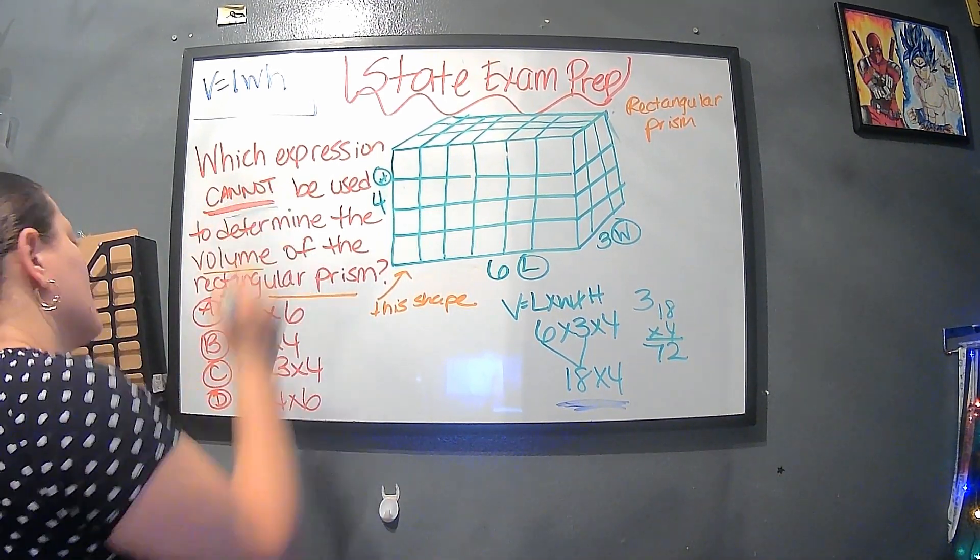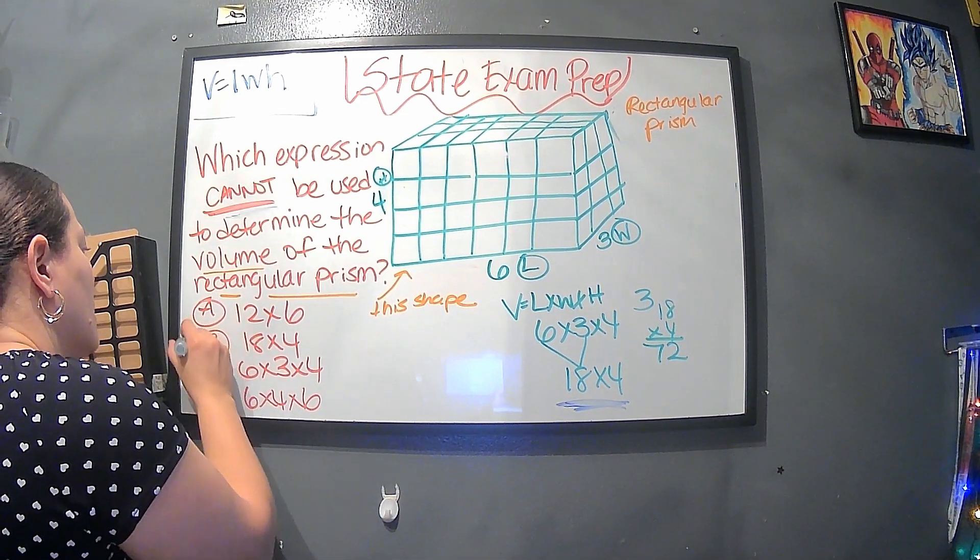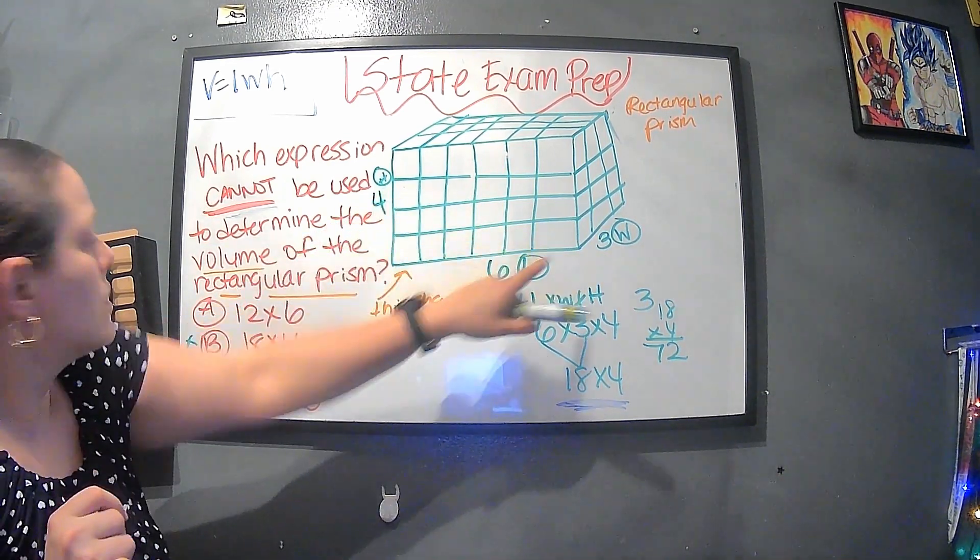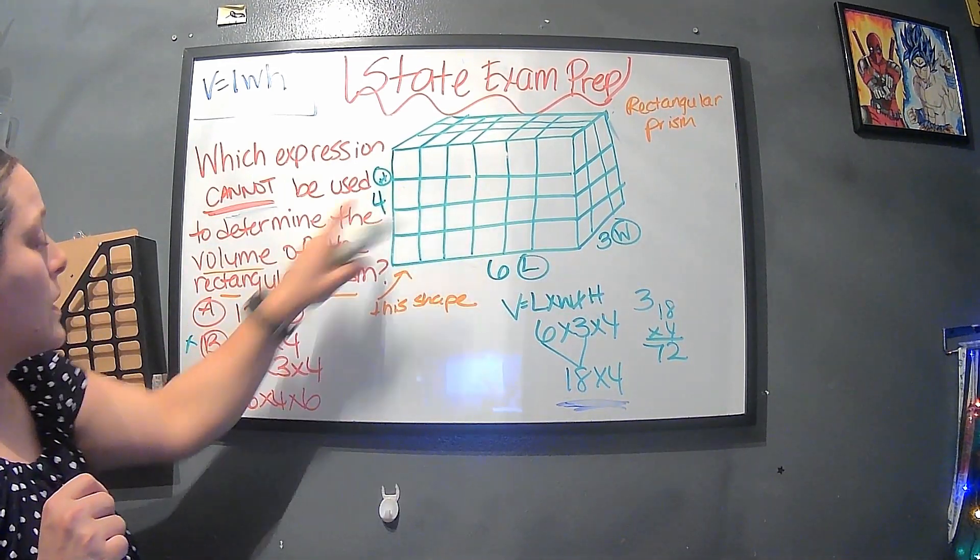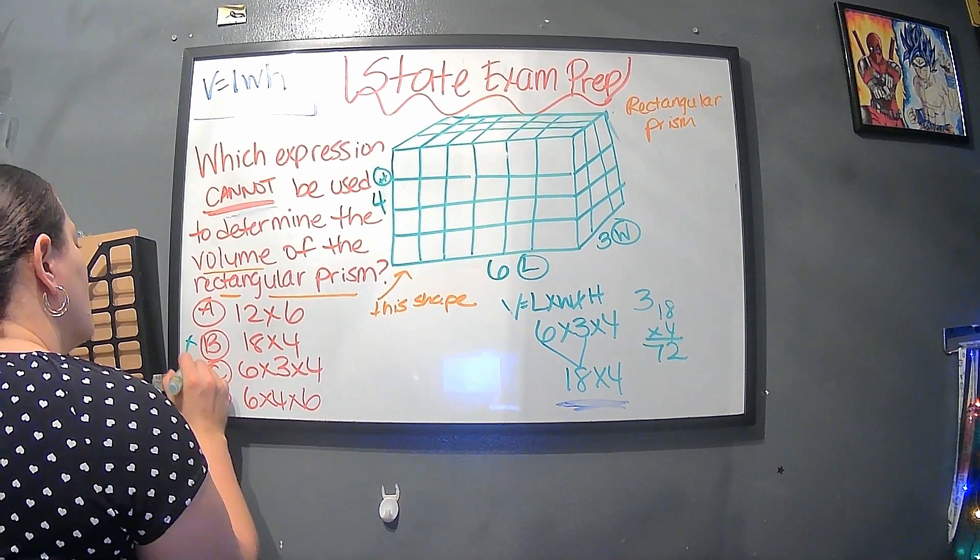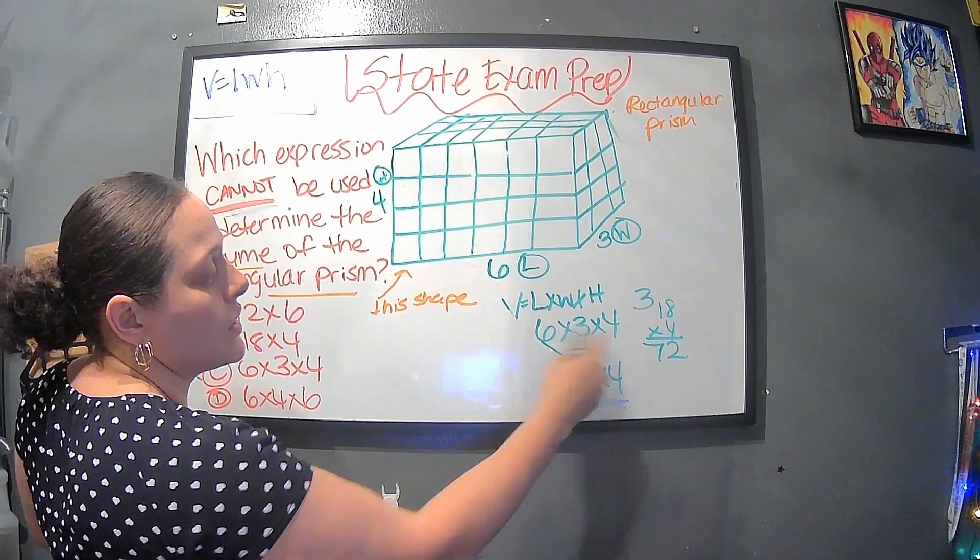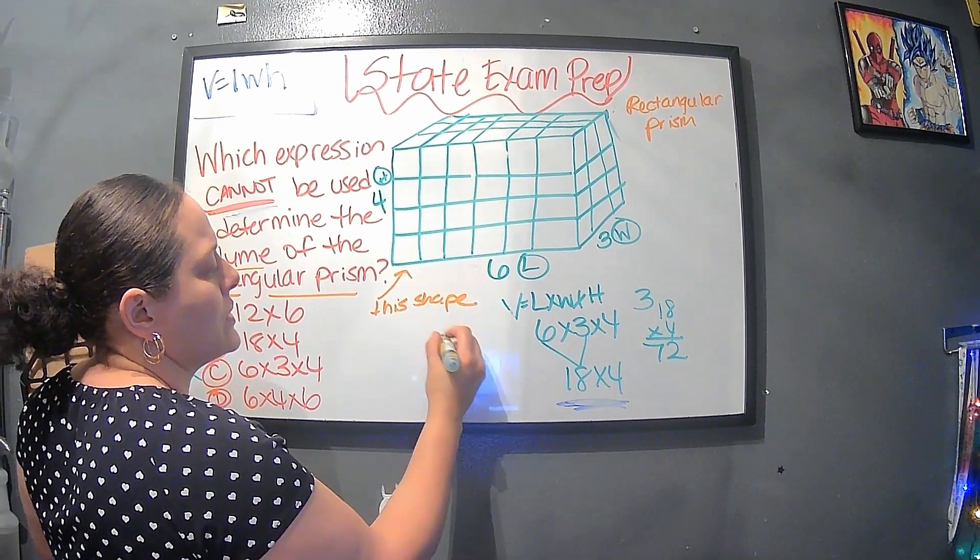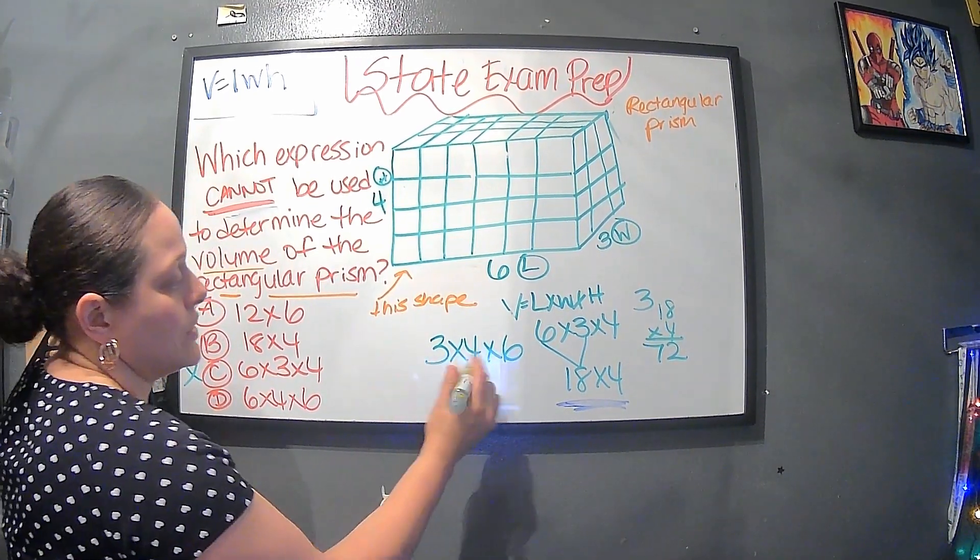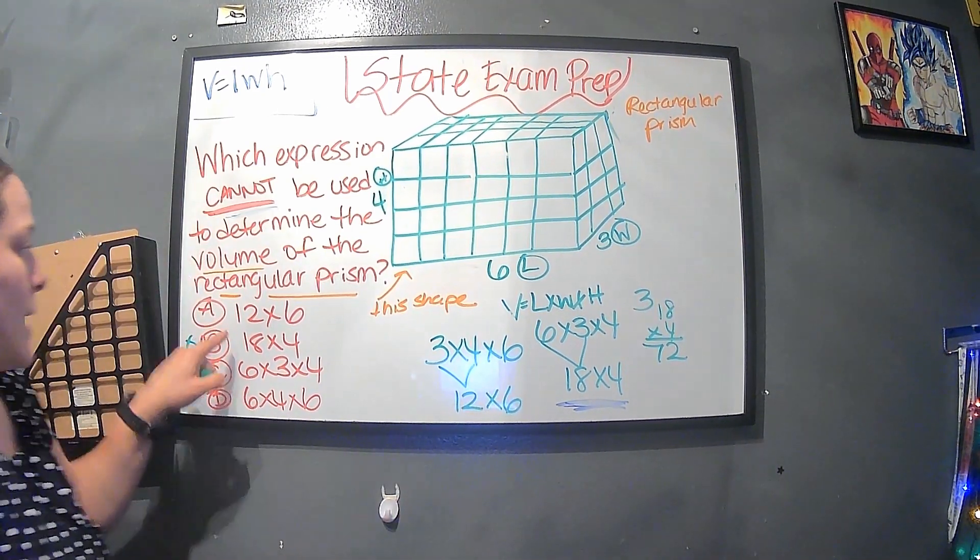In that case, B won't be it. Now let's see. We have six times three times four. Well, that's definitely giving us the volume because that's what we have here. So that can't be the answer. Well, this is where they kind of trick you. Why? Because what they did is they rearranged this. So let's say we decided to do three times four times six. Well, guess what happens if we do three times four? That's 12 times six, and I see that there.